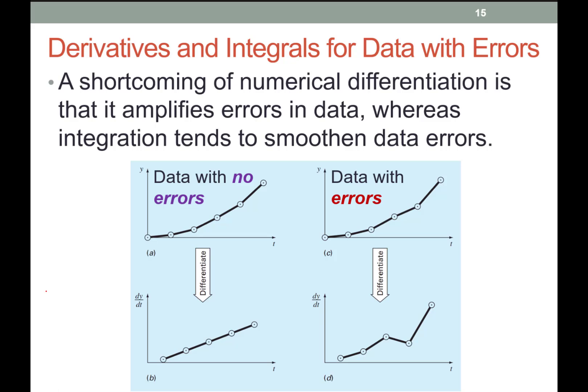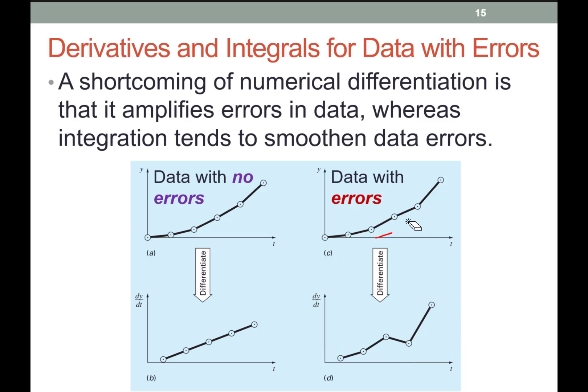You can clearly see that if you're trying to differentiate data, the error is exaggerated. When trying to find the integral, on the other hand, the error is not really exaggerated. Because when finding the integral, you're finding the area below the graph and adding segments — even if one area has error, adding it won't look as bad and will be smoother. That's the main difference between integrating versus differentiating.